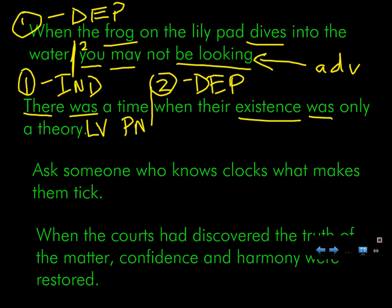Now, last question. If it's a dependent clause, what is it doing in the sentence? Noun, adjective, adverb. What's it working on? It's working on time. And time is a noun. So, what is this? If this is modifying time, if it's telling you about time — it's an adjective. Adjective. Because, remember, adjectives modify nouns. So, very good. We have an adjective clause.